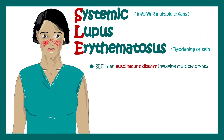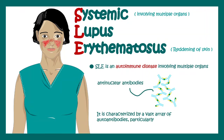Systemic lupus is an autoimmune disease which involves multiple organs. Antinuclear antibodies are the key cause of this disease. The characteristic feature is a vast array of antinuclear antibodies, or ANAs, and one of the hallmark features of this disease is a butterfly-shaped malar rash on the cheeks.